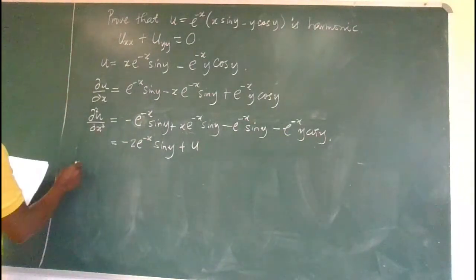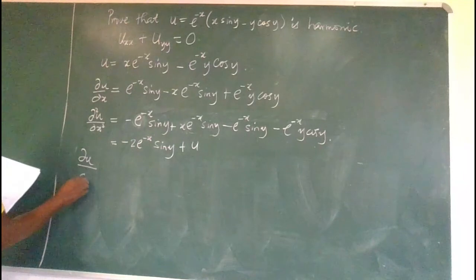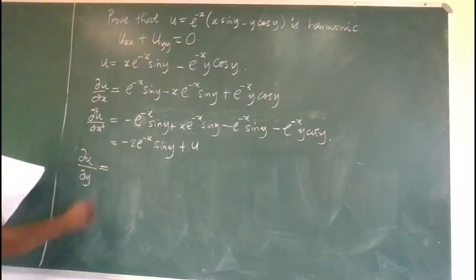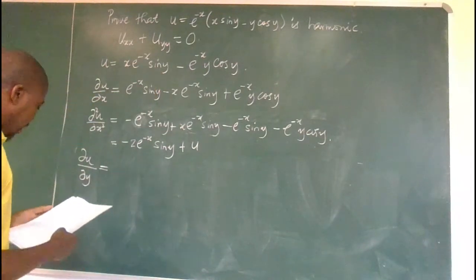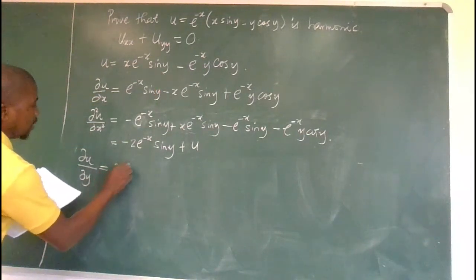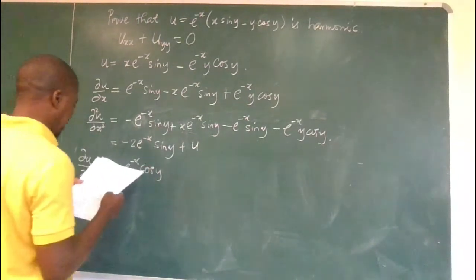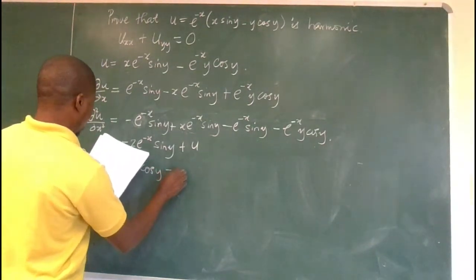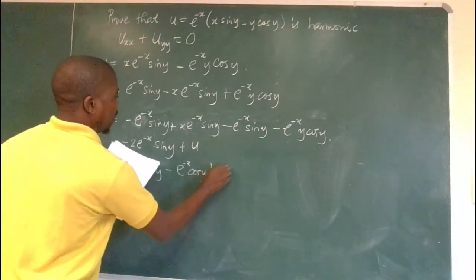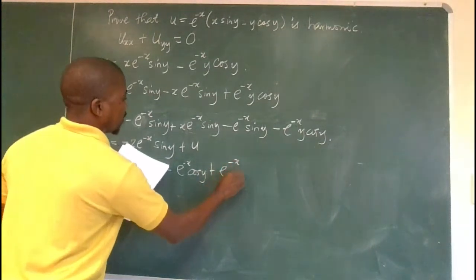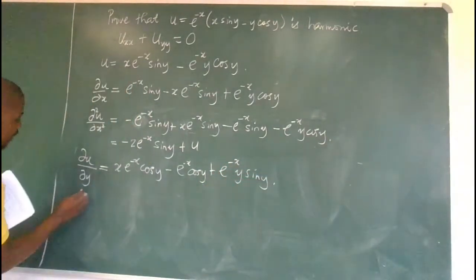Now we do the same for u with respect to y. Taking x as constant and differentiating with respect to y, we have x e to the power of minus x cos y, minus e to the power of minus x cos y, plus e to the power of minus x times y sin y.